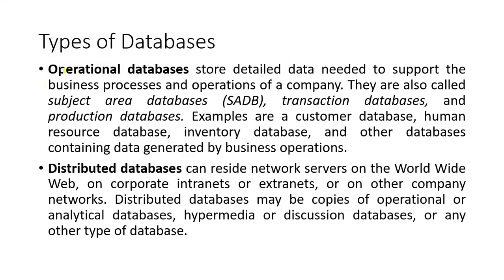We have here the types of databases. The first one is operational databases, which store detailed data needed to support the business processes and operations of a company. These databases are also called subject area databases, transaction databases, and production databases. Examples include customer database, human resource database, inventory database, and other databases containing data generated by business operations.